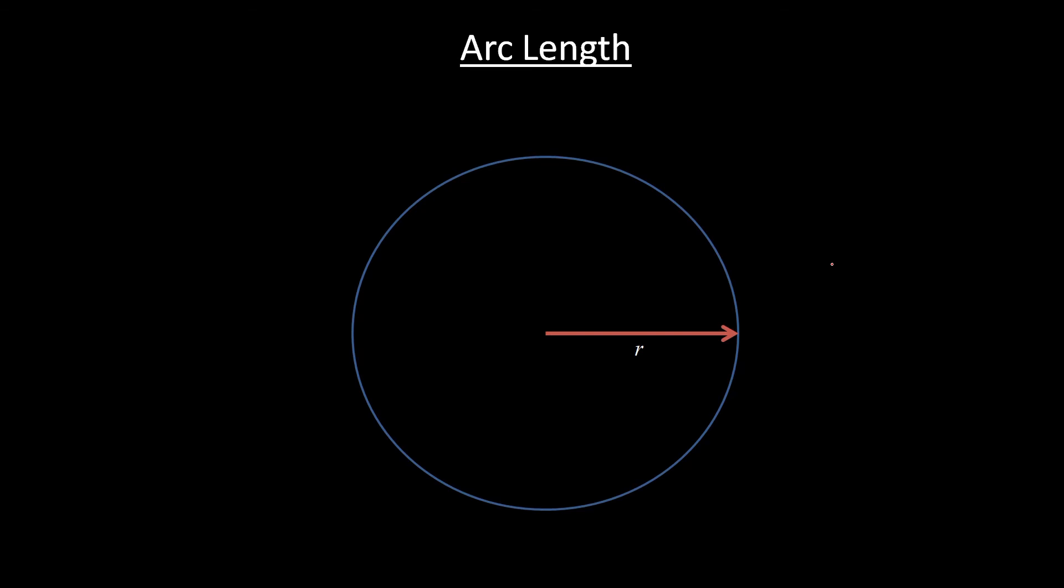So the last thing this section throws at you is arc length, which can actually be extremely useful. For this section, it's mostly just used for the word problems. And the arc length is the length of the circumference of a circle. Now the circumference of the circle, you may know it's 2πr, but that's the full circumference. So what if we have our initial side right here, which is radius r, and we rotate through theta degrees, then what is this length?